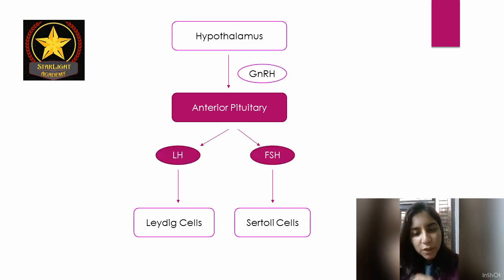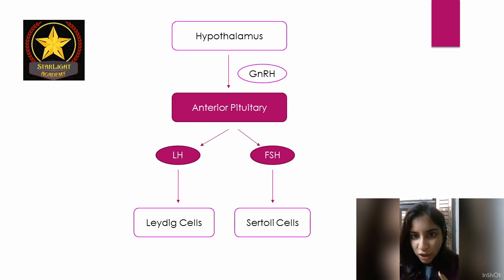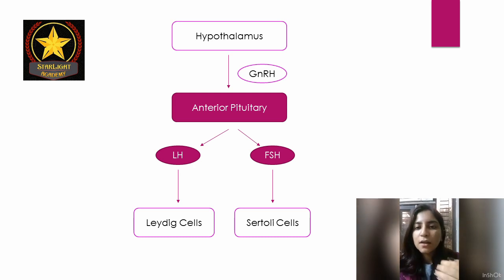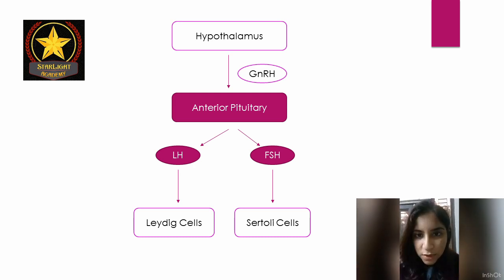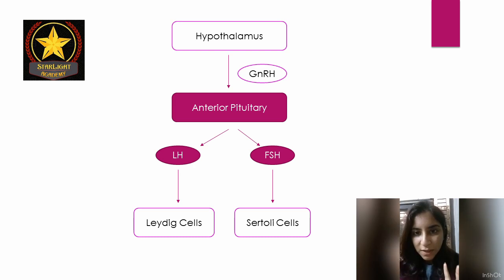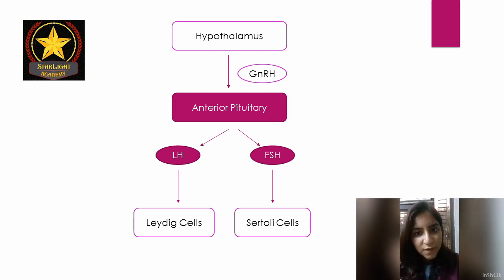The anterior pituitary, upon stimulation by GnRH, secretes hormones named gonadotrophins. Gonadotrophins are of two types: LH and FSH.